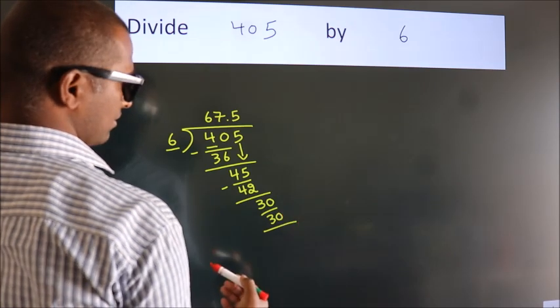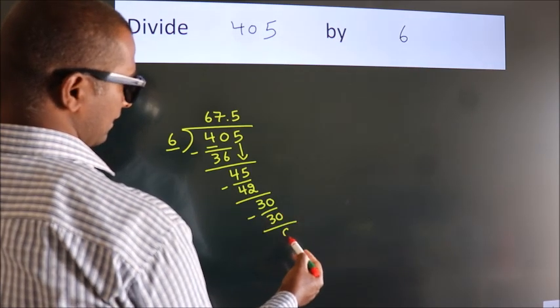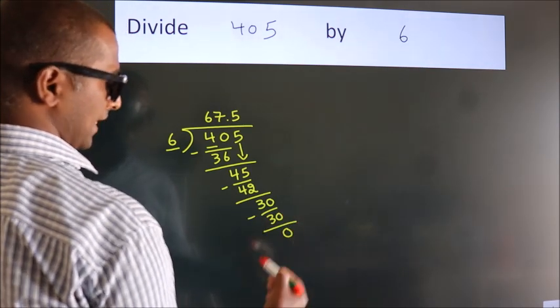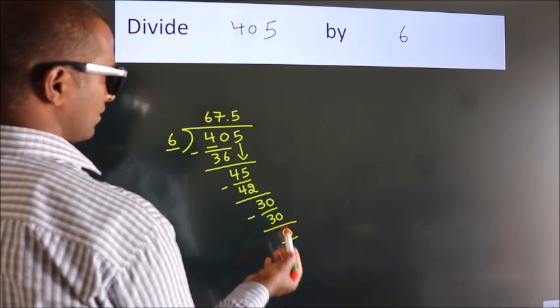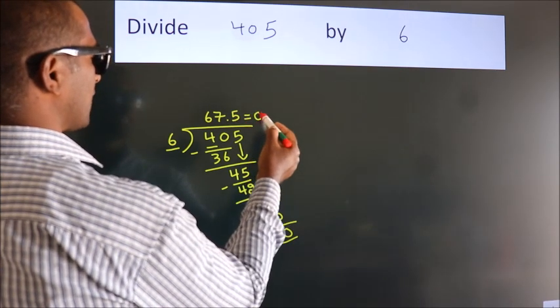Now we subtract. We get 0. Here we got remainder 0. So this is our quotient.